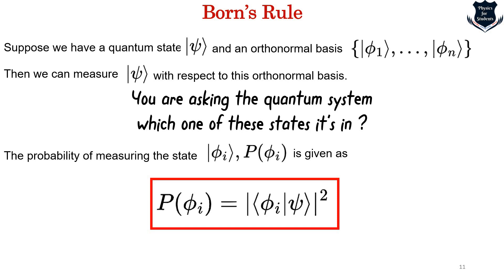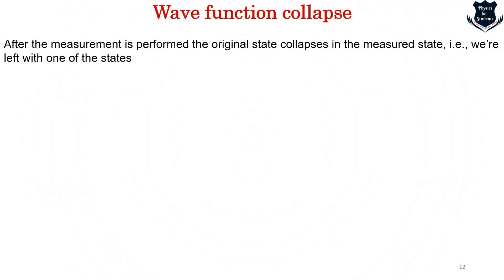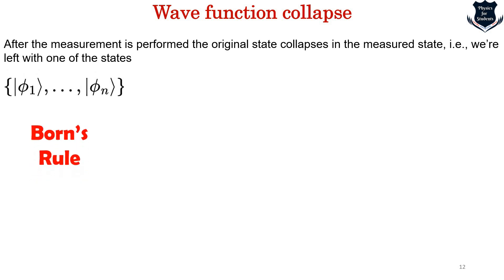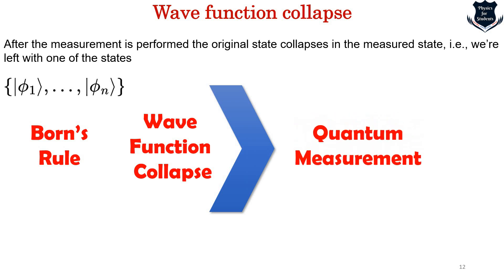This is still incomplete until we account for wave function collapse. We have measured the state, but the postulate also tells us the wave function collapses. After the measurement, the original state collapses and we are left with the projected state. From a mathematical point of view, Born's rule and the wave function collapse together constitute what is called quantum measurement: the squaring of the amplitude gives Born's rule, the wave function collapses into a particular state, and together they form a quantum measurement.